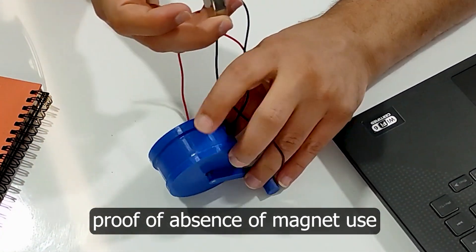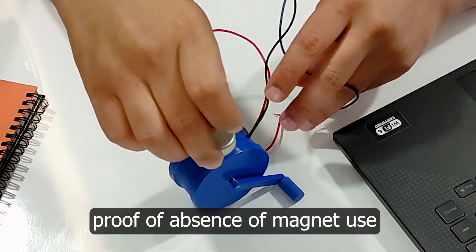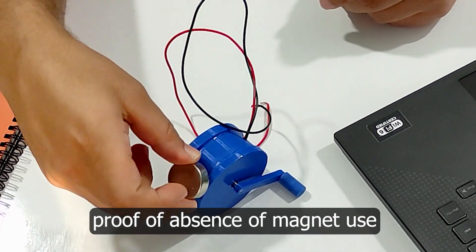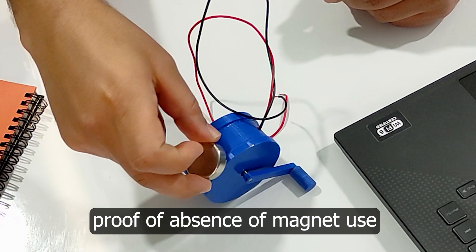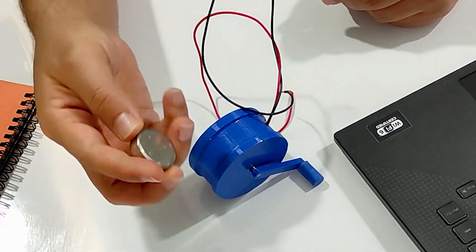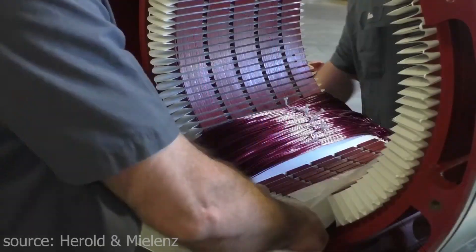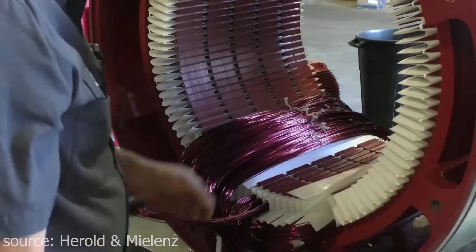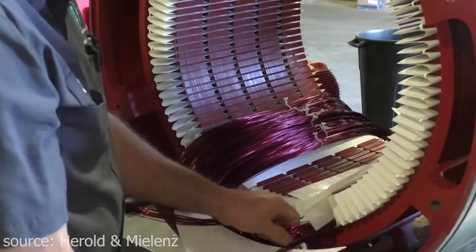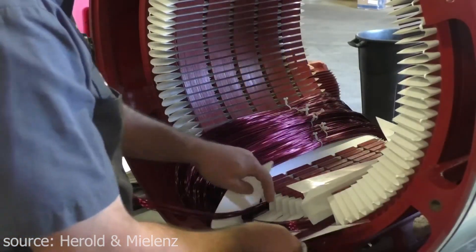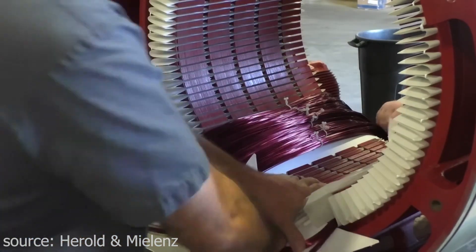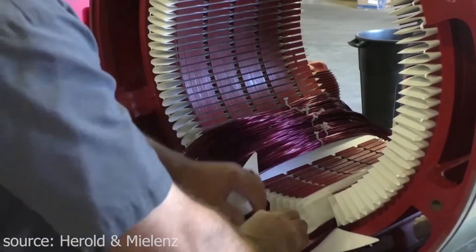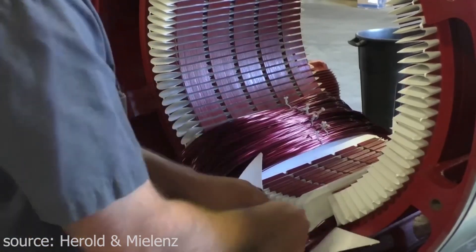Furthermore, a generator without magnets offers enhanced durability and longevity. The absence of magnets eliminates concerns about wear and tear over time, which can lead to efficiency degradation. This groundbreaking design also contributes to the generator's maintenance simplicity, reducing the need for frequent inspections and repairs. Additionally, the removal of magnets results in a reduction of weight and size, making these generators more compact and versatile.